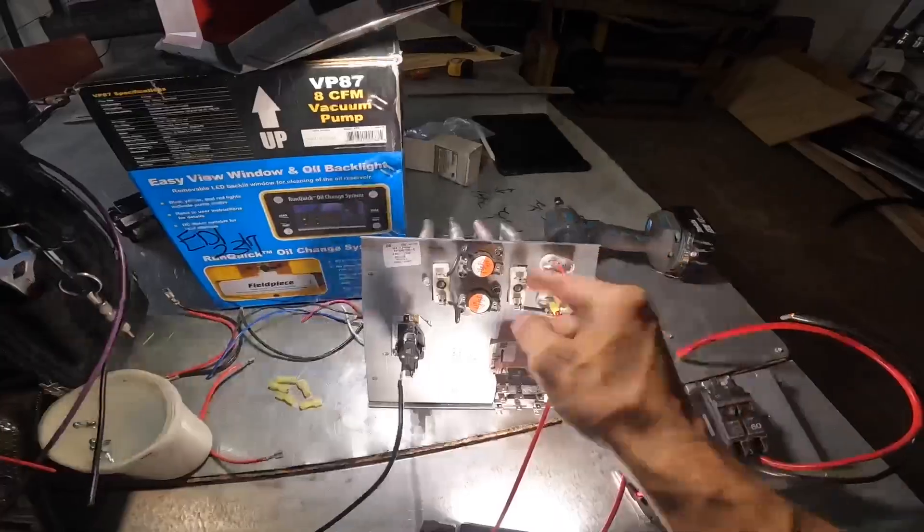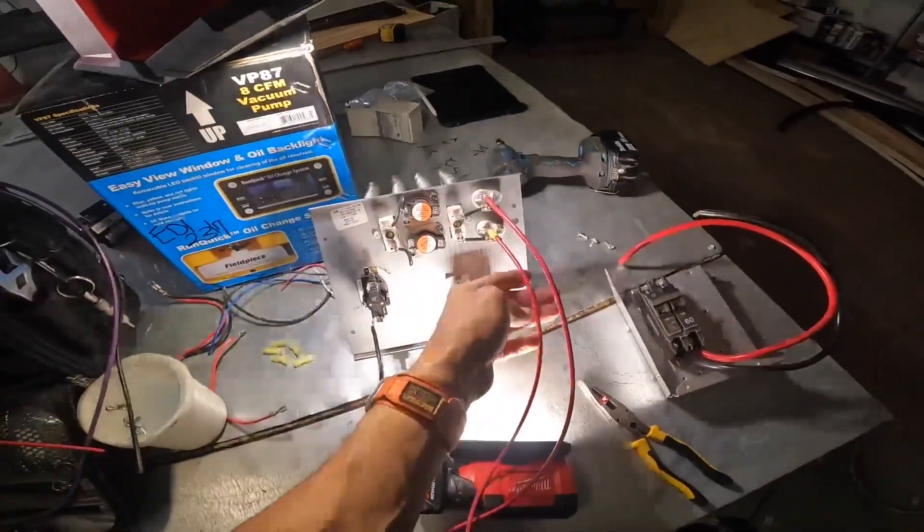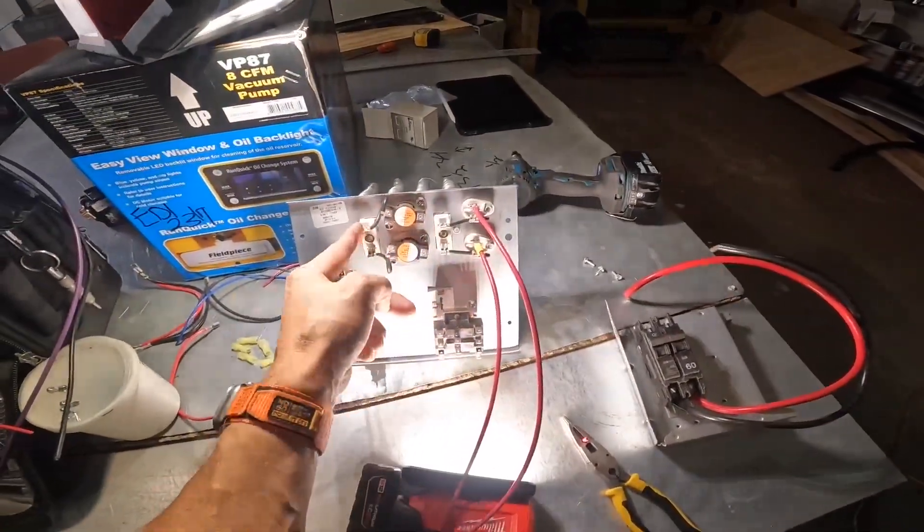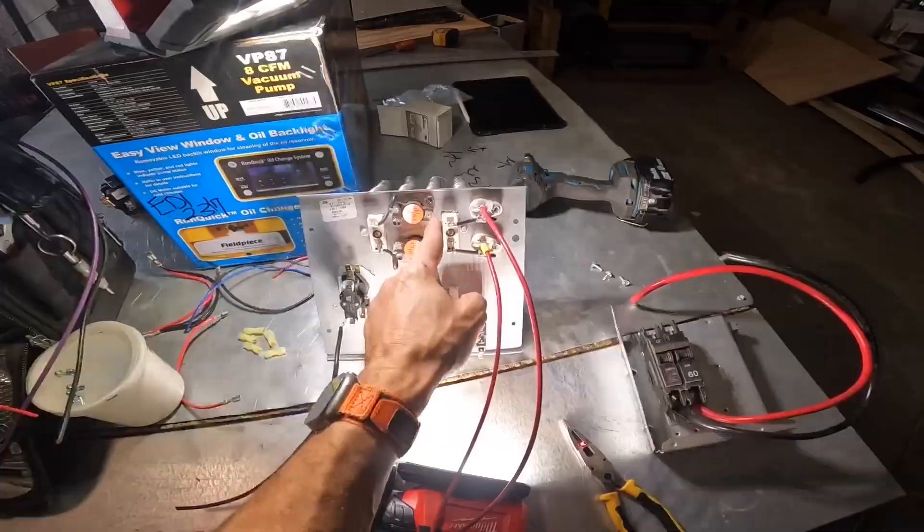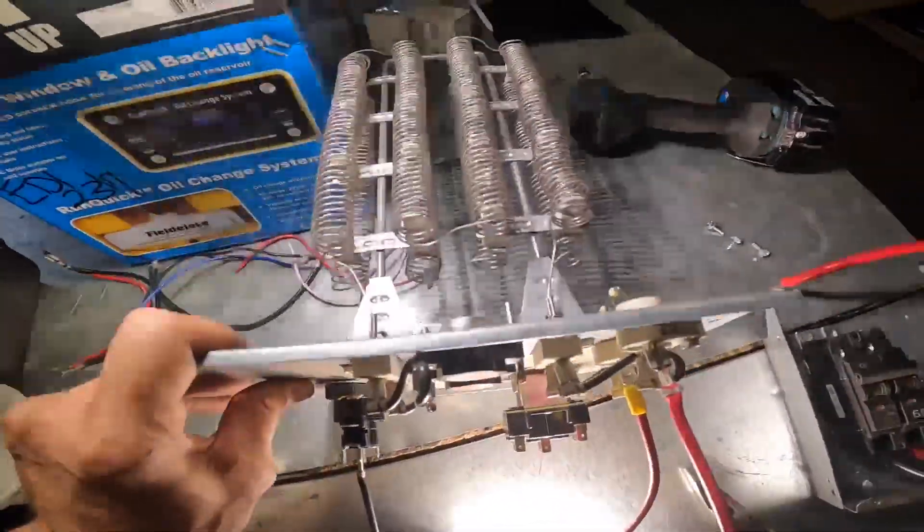But normally it's closed and it sends power to that right there which is my heat strip. And this is the other side of my heat strip and my other power goes to this limit right here and it goes through here to the other side of my heat strip.